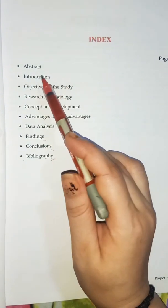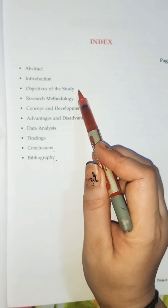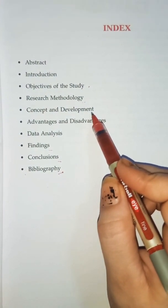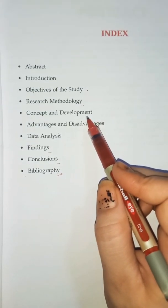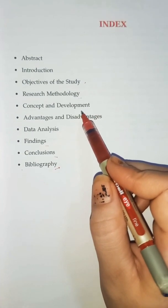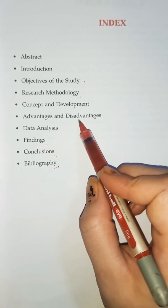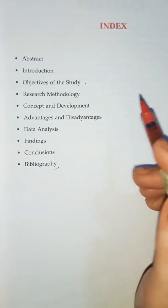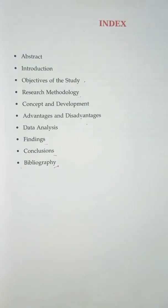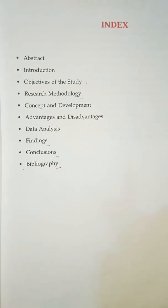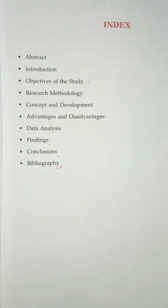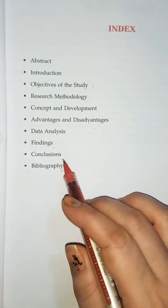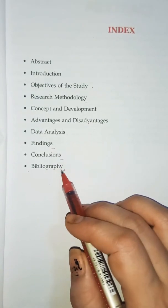Some points you must mention for every topic: introduction, objective, research methodology. After that, your specific topic content — for example, unemployment causes, poverty, unemployment government comparison, data analysis. Conclusions come last, followed by bibliography. These are the common points which you have to do step by step, and the topic-specific content depends on your chosen topic.